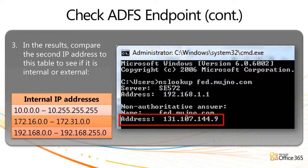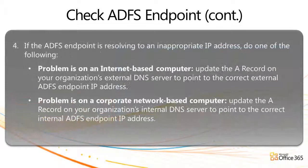If the computer is inside the corporate network and the IP address is public, or if the computer is outside the corporate network and the IP address is internal, there's an issue with the A record in DNS. If the computer is outside the corporate network, update the A record on your organization's external DNS server to point to the correct external ADFS endpoint IP address. And if the computer is inside the corporate network, do the same on your organization's internal DNS server to point the A record to the correct internal ADFS endpoint IP address.